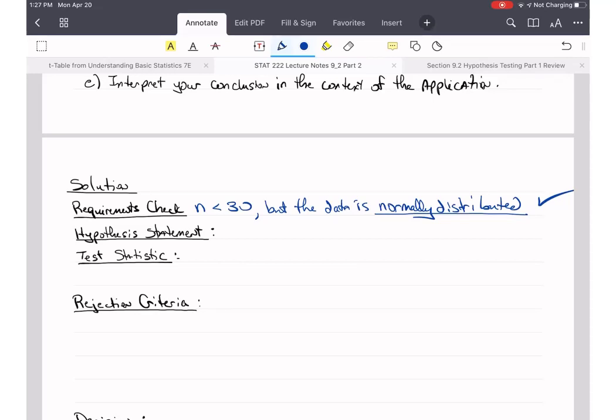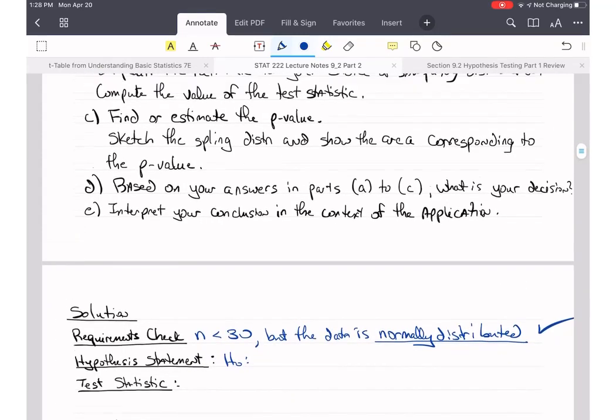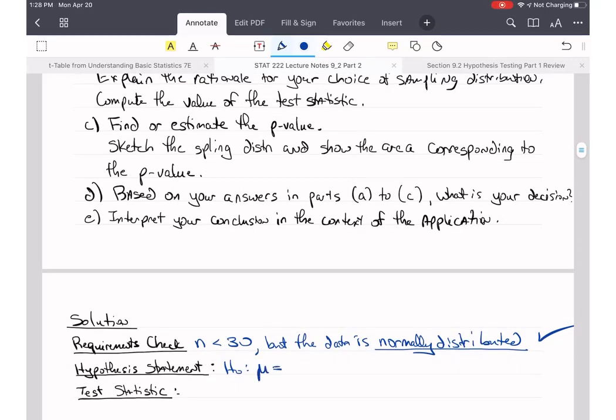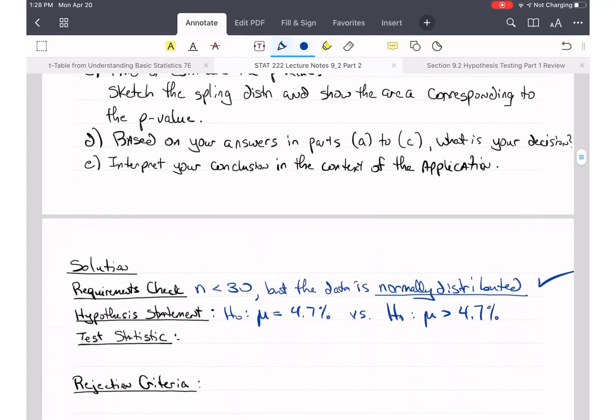So let's write our hypothesis statement. Well, it turns out that this is going to be the same as we had before. This is not going to change. So we go up here and we find our claim that the dividend yield of all Australian banks is higher than 4.7%. The reason I'm doing this and repeating this is I want to show you the difference. We're going to get some different values for the p-value, and we may even have a different conclusion. So this is 4.7%. So H0, mu equals, it's always going to be equal, 4.7% versus the alternative H1, mu is greater than 4.7%. So again, this part of it is going to be exactly the same.